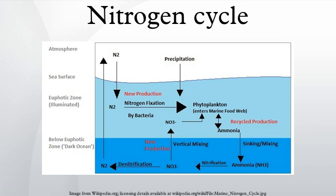Molybdenum nitrogenase is a complex two-component enzyme that has multiple metal-containing prosthetic groups. An example of a free-living bacteria is Azotobacter. Symbiotic nitrogen-fixing bacteria such as Rhizobium usually live in the root nodules of legumes. Here they form a mutualistic relationship with the plant, producing ammonia in exchange for carbohydrates. Because of this relationship, legumes will often increase the nitrogen content of nitrogen-poor soils.